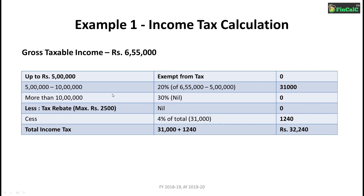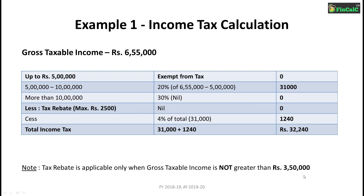Since income is not more than Rs 10 lakhs, income tax at the 30% slab rate is Rs 0. Since gross taxable income is more than Rs 3,50,000, tax rebate is also not applicable in this example. 4% CES is applicable on income tax of Rs 31,000, which equals Rs 1,240. So total income tax becomes Rs 31,000 plus Rs 1,240, equal to Rs 32,240.